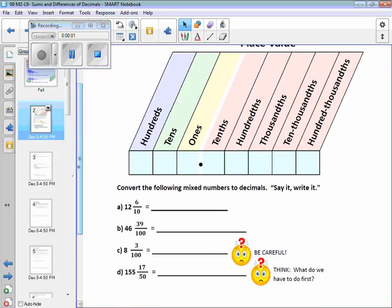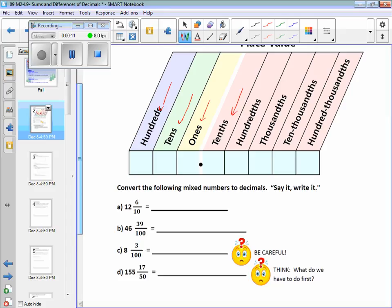A quick review on place value: ones, tens, hundreds - you're familiar with, right? To the right of the decimal, you just have to remember it's not ones like you have ones, tens, and hundreds to the left of the decimal. This first place value here is not the ones, it goes right to the tenths.